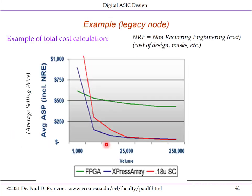Another cost example from ExpressArray compares average selling price versus volume for three implementations: FPGA, standard cell ASIC, and gate array in a legacy 180nm CMOS node. The FPGA benefits little from volume so its price stays high. The gate array is more cost effective than the standard cell ASIC until the standard cell hits fairly high volumes. This is just an illustrative example — don't take it as a universal trade-off graph.